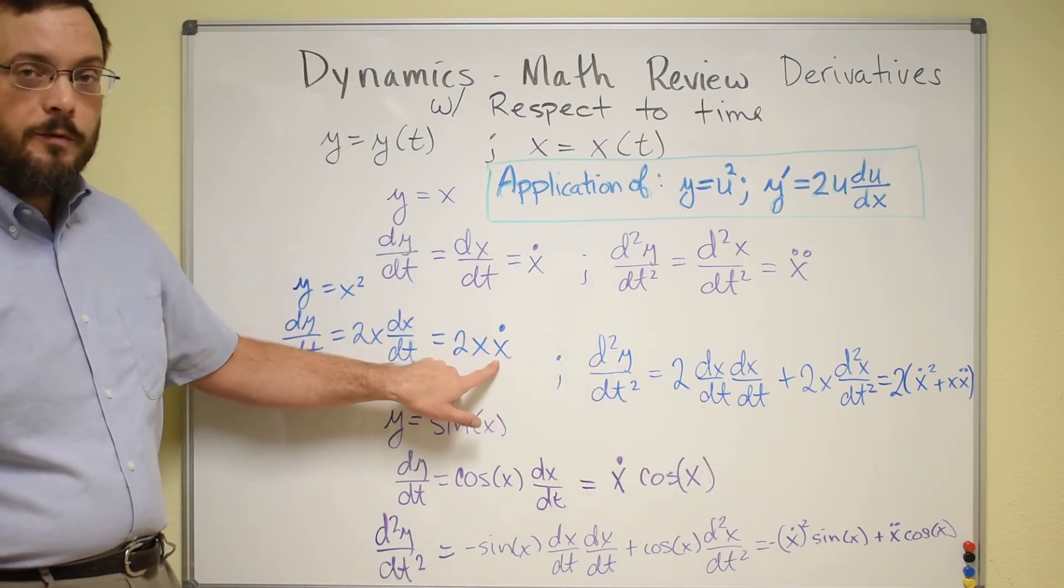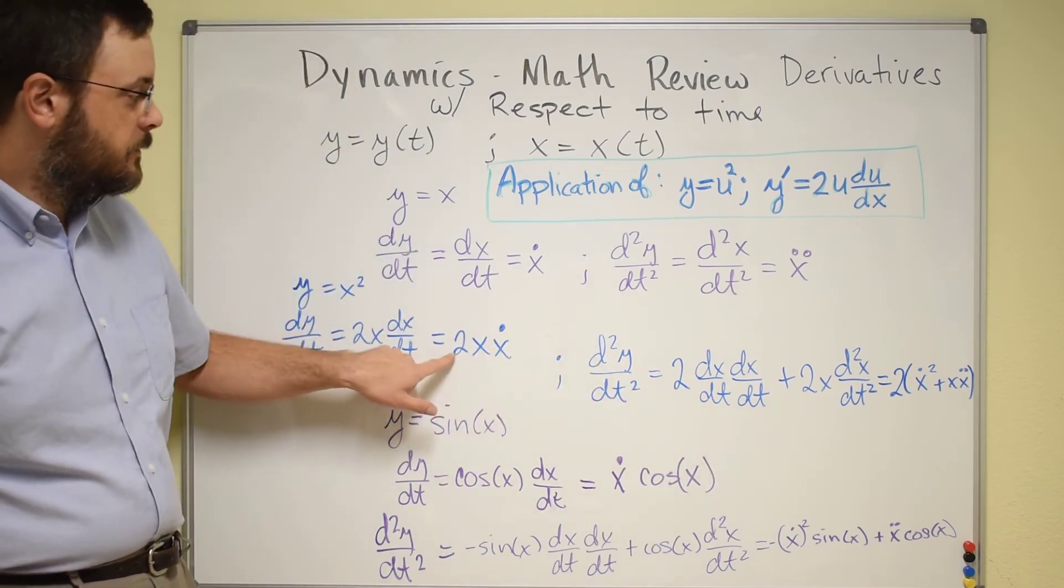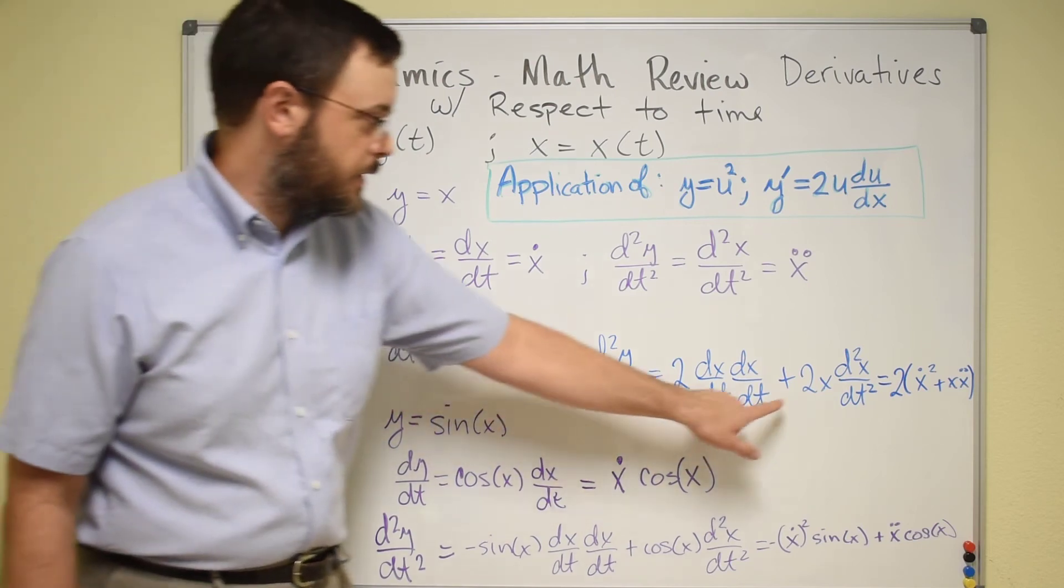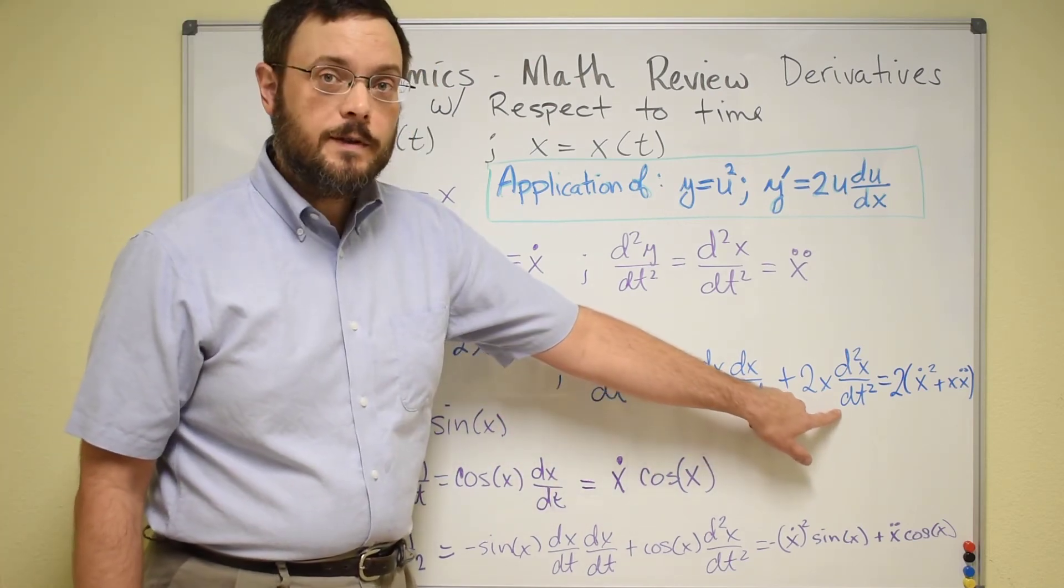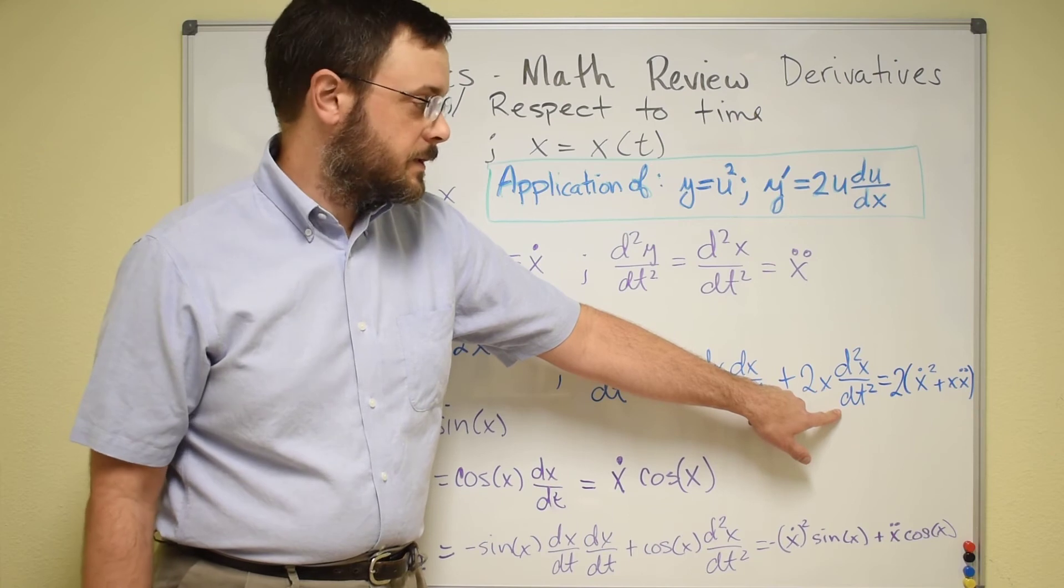Then we're going to take a derivative of the second term. So we have the 2x that's set out in front, times the derivative of that second term, which is that d²x/dt². And then in the dot notation, you could write this, pulling the 2 out front,